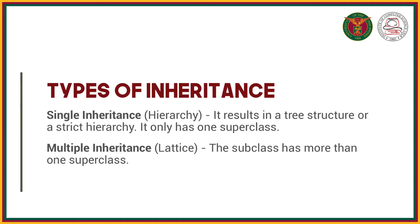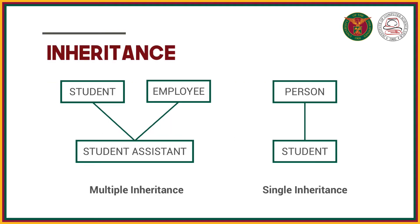We have two types of inheritance. Single inheritance, or hierarchy, results in a tree structure or strict hierarchy and only has one superclass. In multiple inheritance, also called a lattice, the subclass has more than one superclass. To illustrate: this is what multiple inheritance looks like, and this is what single inheritance looks like.